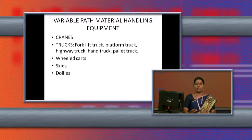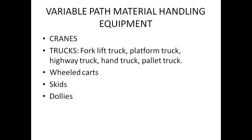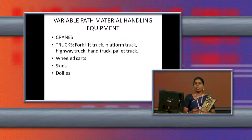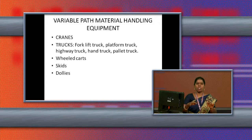The next variable path equipment is the wheeled cart. The cart can be used in any place and is therefore called a variable path material handling equipment. Next is skids — there is a roller or rolling wheel on a table. Materials are placed on that table and it can be pulled to any place.